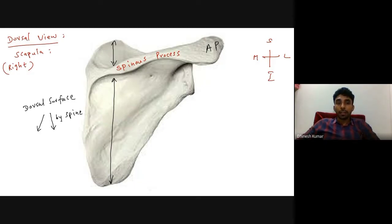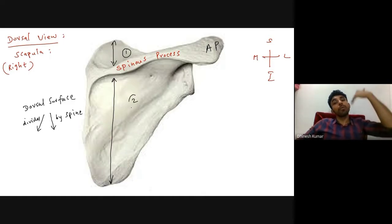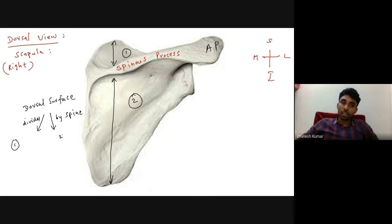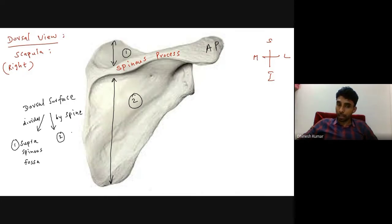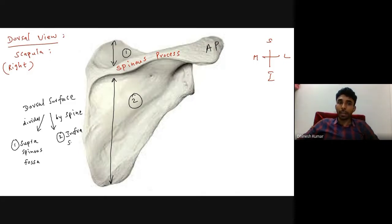The dorsal surface is divided by the spine of the scapula into two areas: number one is above the spinous process, and number two is just below the spinous process. The area above the spinous process is called the supraspinous fossa — fossa meaning depression. The larger area just below the spinous process is called the infraspinous fossa.